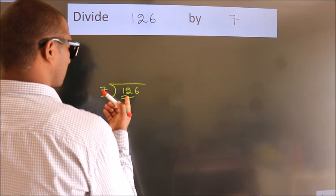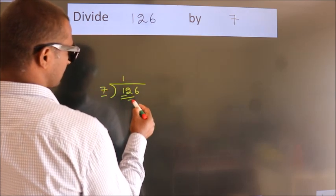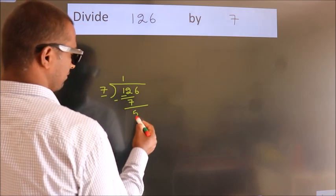A number close to 12 in the 7 table is 7 once 7. Now we should subtract. We get 5.